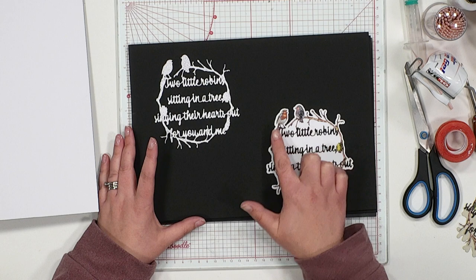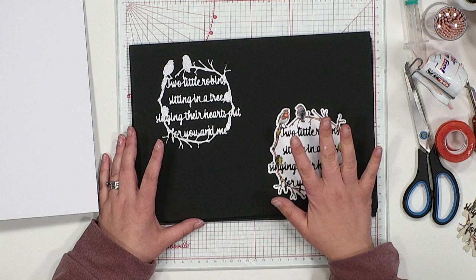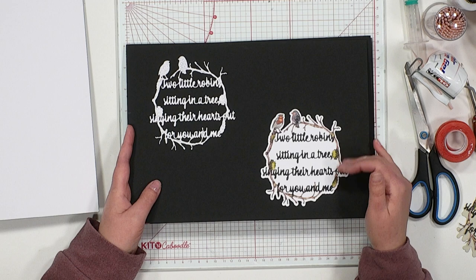A lovely poetic sing-song kind of verse surrounded by the branch and you've got those two little robins as mentioned in the rhyme there, singing to one another as well.